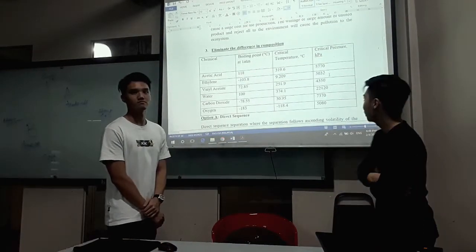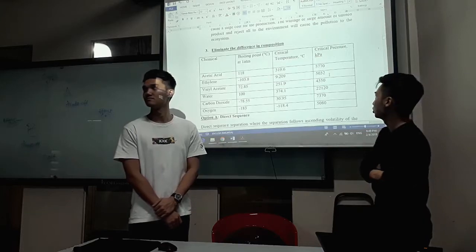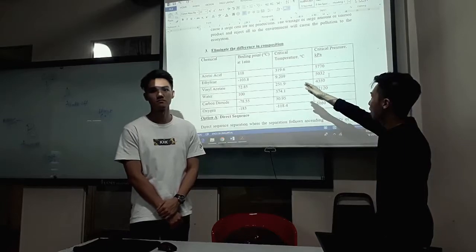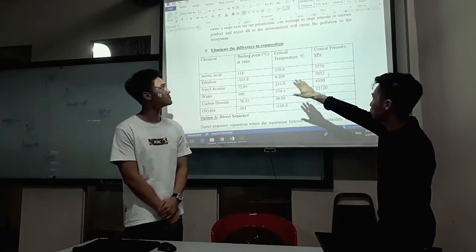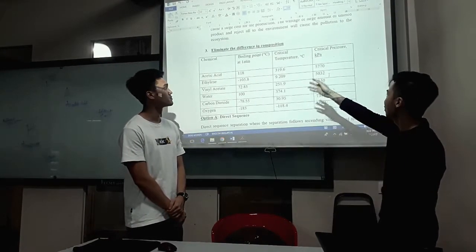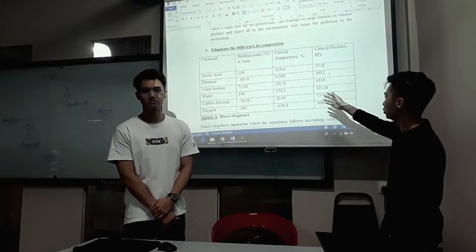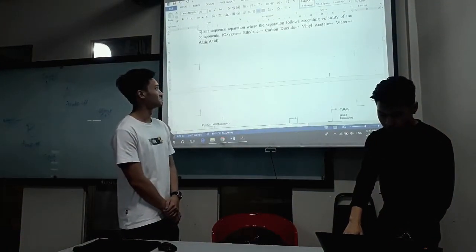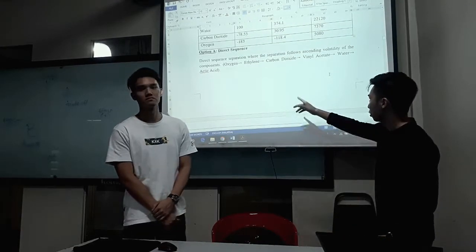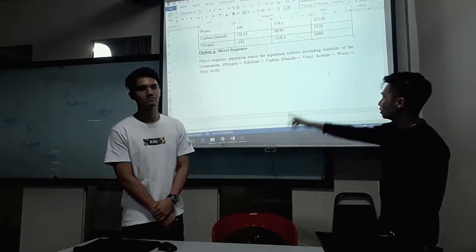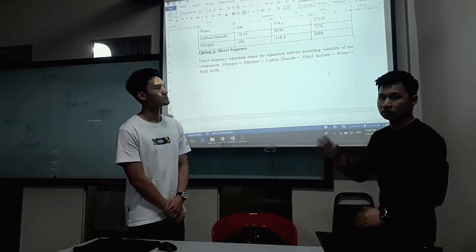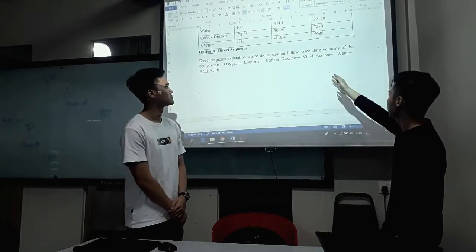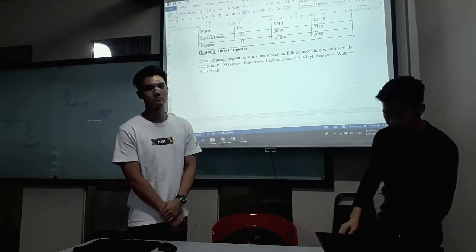For this part, I have learned the differences in the properties of all raw materials and products, including the boiling point, critical temperature, and critical pressure. So by knowing all these properties, there is some analysis for the separation sequence options. Option A is the direct sequence, which follows descending order of volatility, starting from oxygen, ethylene, carbon dioxide, acetic acid, and water until acetic acid.